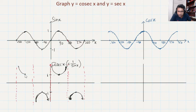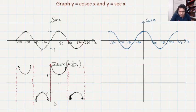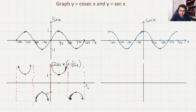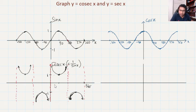Now, what is the period of cosec X? You can see it is the same as sine X. The period of sine X is 360 degrees, and here too the graph repeats every 360 degrees — one section is concave up and one is concave down, and the same pattern repeats. So the period of cosec X is 360 degrees.